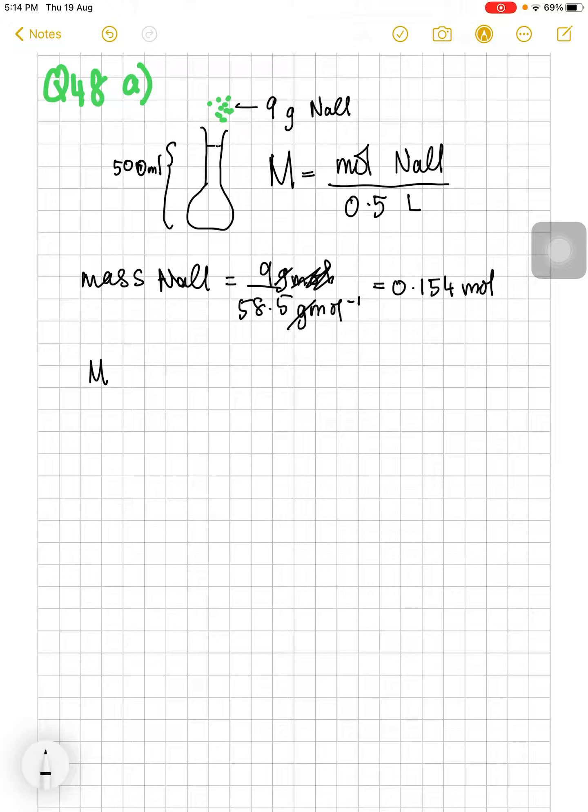Next, we find the molarity. Molarity is the number of mol of NaCl, which is 0.154 mol, over 0.5 liter. So molarity is 0.31 molar. All the units will be mol per liter. That's all.